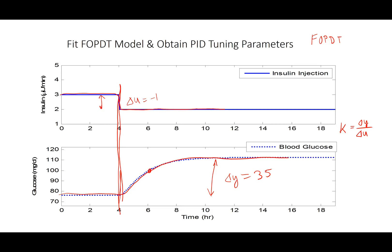And then to get 63% of the way there, it takes about two hours. So my time constant is about two hours. Okay, so there I have it, negative 35 for the gain and about two hours for the time constant.